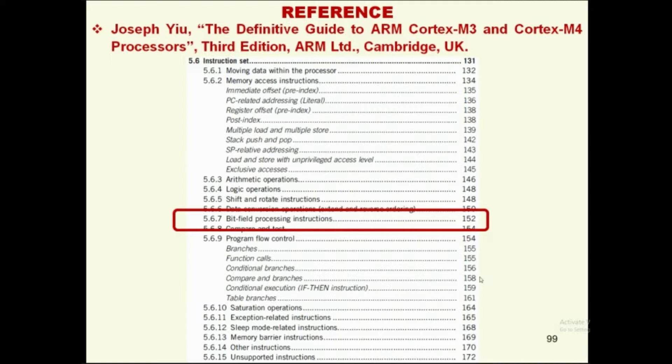There are instructions to set an individual bit, instructions to clear a bit, and bit addressable memory locations and ports. Similarly, individual bits can be set or cleared. Along with that, a group of bits can be set, cleared, inserted, or removed from a 32-bit word. This gives programmers more comfort to switch on or off several devices simultaneously.